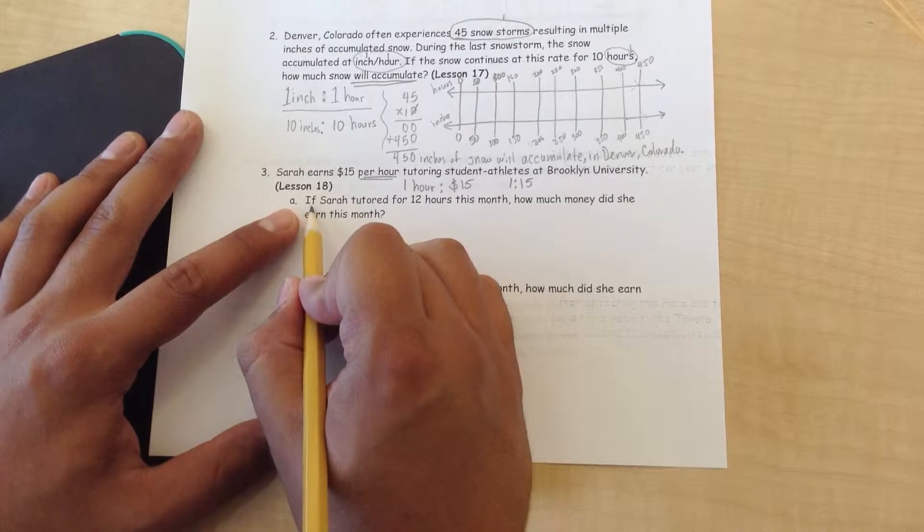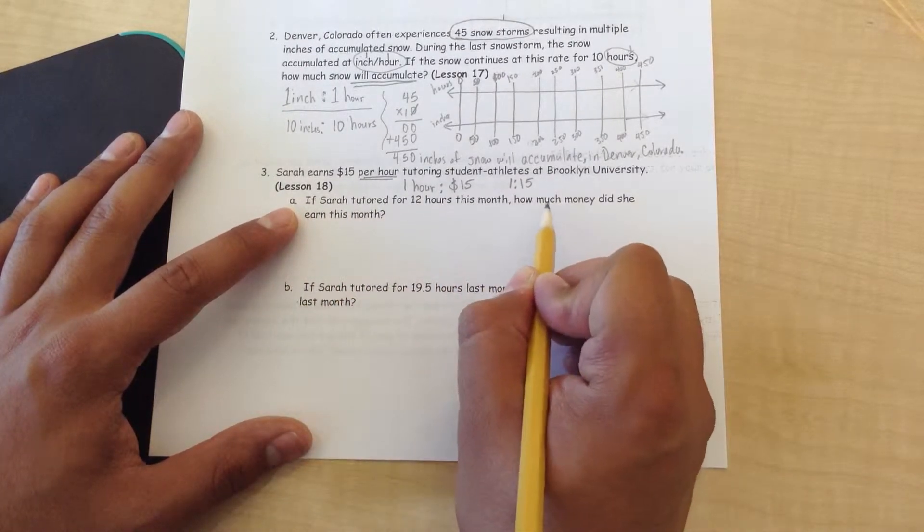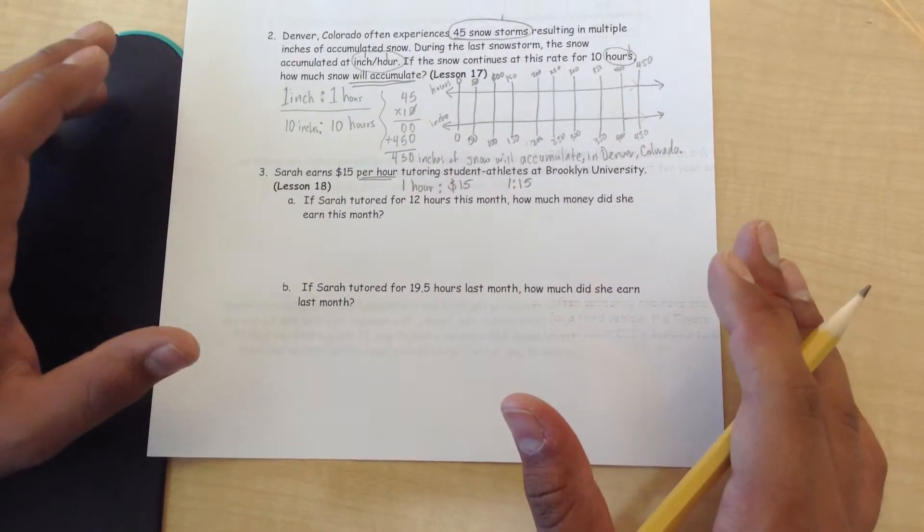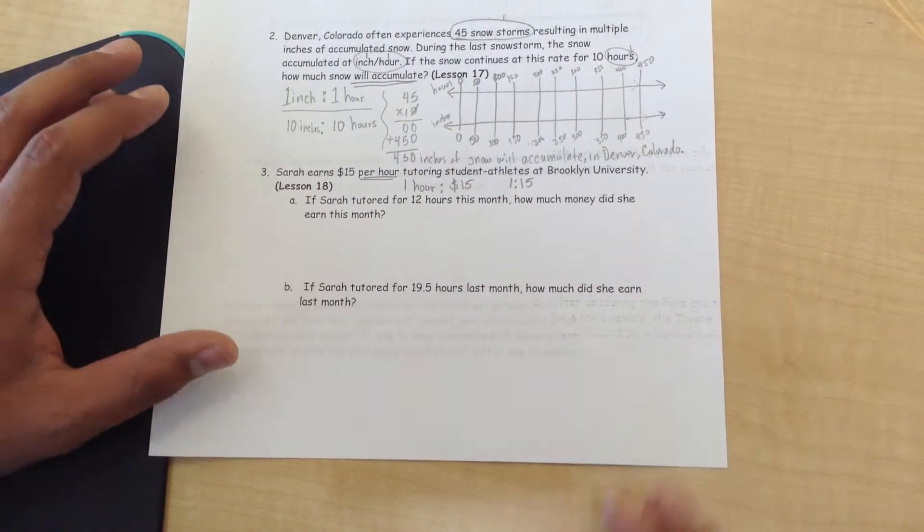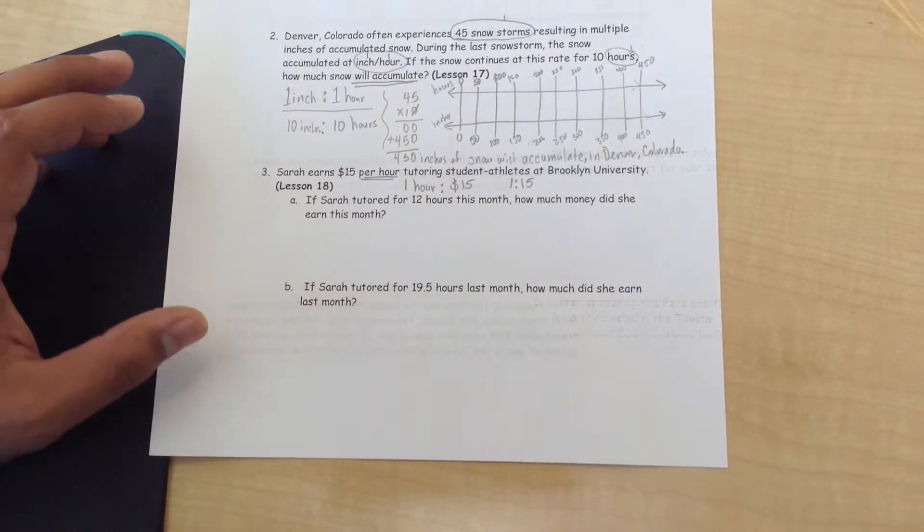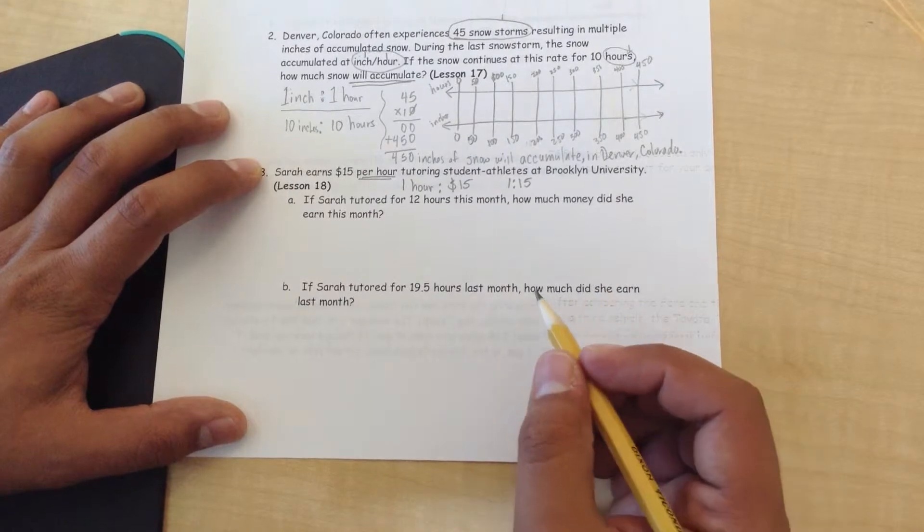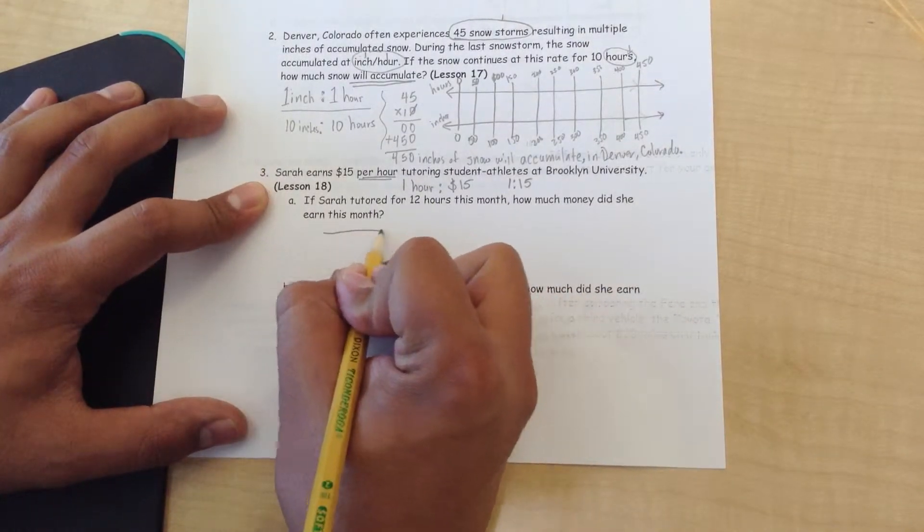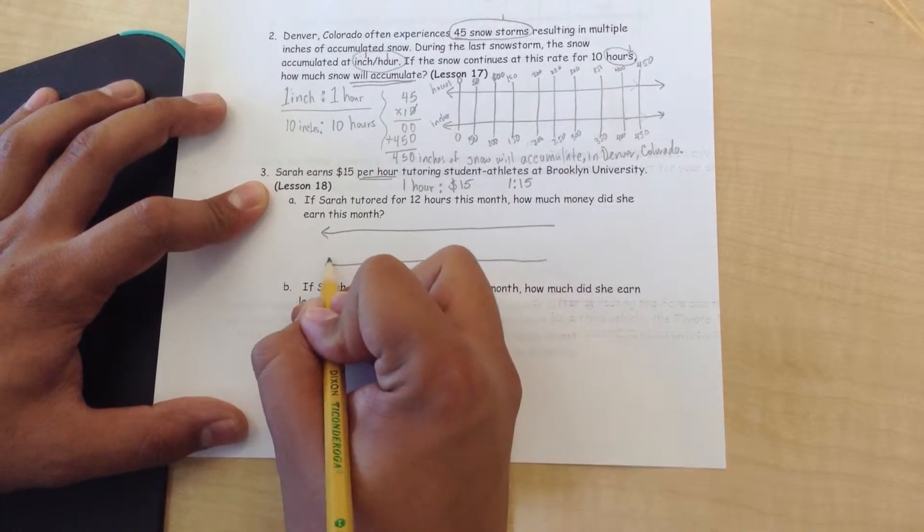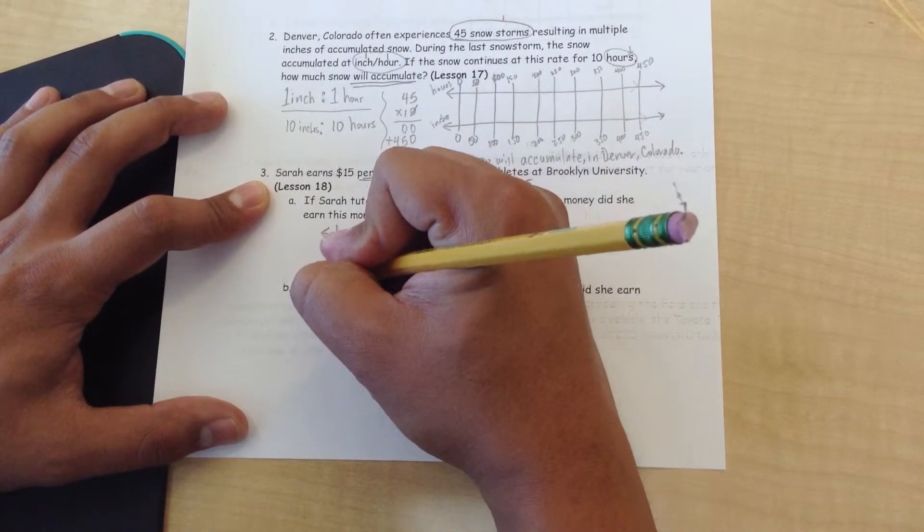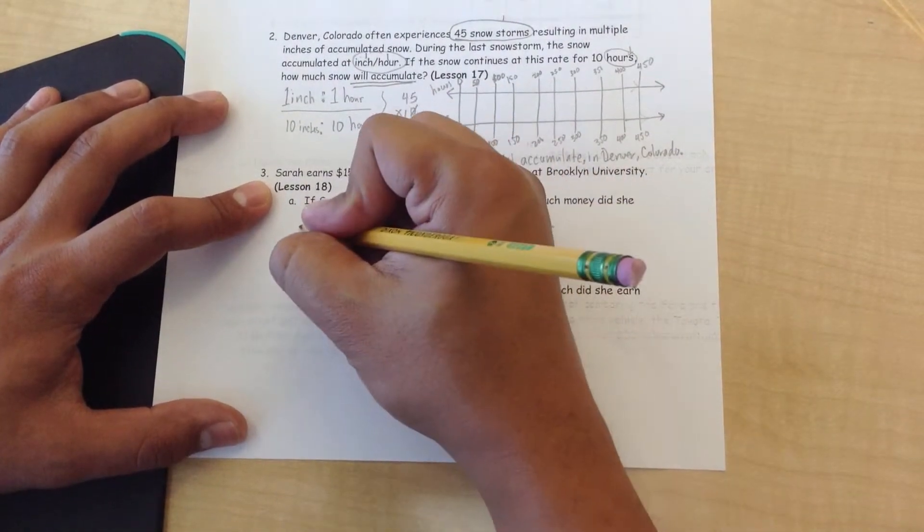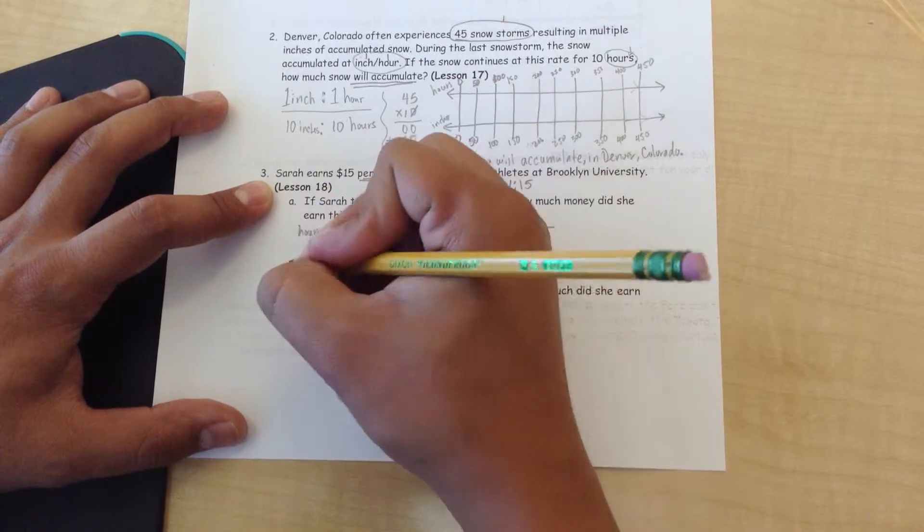All right, let's look at part A of this question. If Sarah tutored for 12 hours this month, how much money did she earn this month? The easiest thing to do would be the algorithm, but let's go ahead and try actually drawing the model first and see if we recognize the solution. Then we'll check our answer with the algorithm. So we're going to go ahead and draw the forever faithful T-chart. And I'm going to number out here: hours and pay.